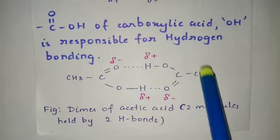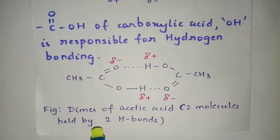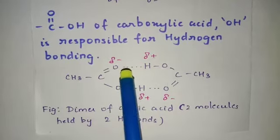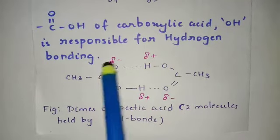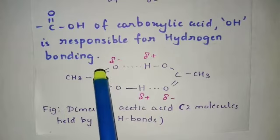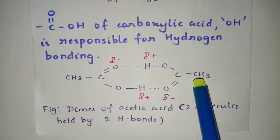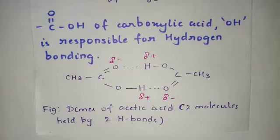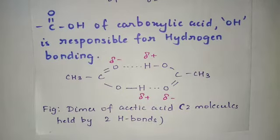Between both these acetic acid molecules, the two molecules are held together by two hydrogen bonds. The hydrogen of the O-H of this molecule bonds with the oxygen of the other molecule. Similarly, the hydrogen of the other molecule bonds with the oxygen of this molecule. I have also drawn the partial charges. So in carboxylic acid, the O-H is responsible for formation of hydrogen bonding.